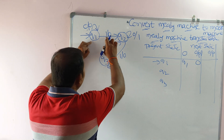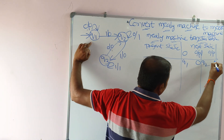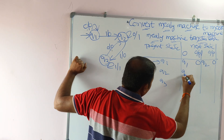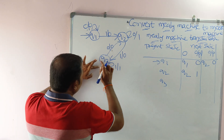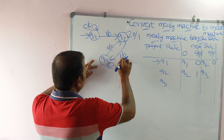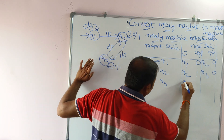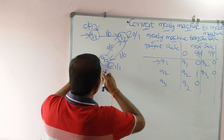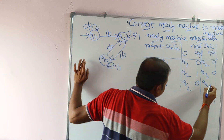Next, q1 on zero goes to q2 with output one. Next, q2 on one goes to q3 with output zero. q3 on zero goes to q2 with output zero, and q3 on one goes to q3 with output one.